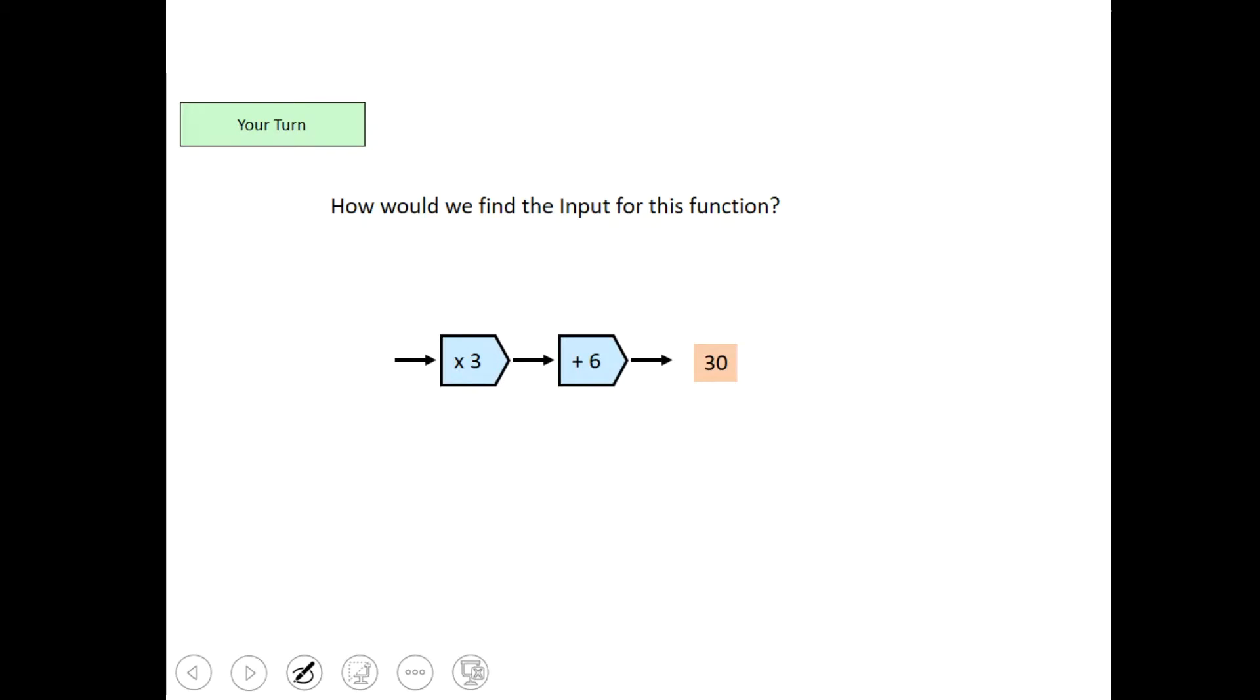Here's one for you to try. What is the input if the output for this function is 30? Pause the video, press play when you will see the answer. So, the answer should have been 8. And the way you work that out is going backwards through the function. I'm going to subtract 6 first, then I'm going to divide by 3, okay? So, there are two things that you're undoing. So, we start with 30, take away 6 and that gives us 24. Divide it by 3 and that gives us 8, as it says there, okay? So, that is the input for this function.